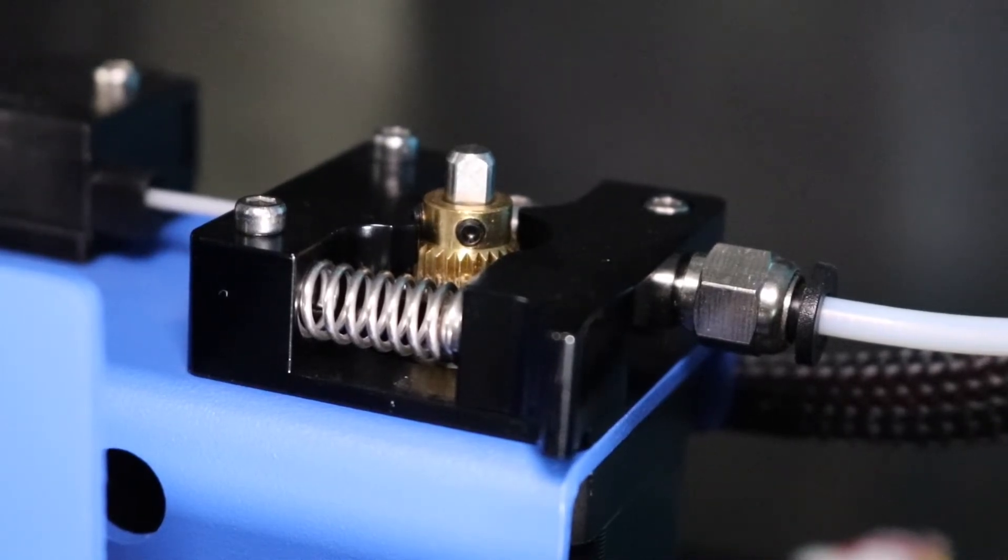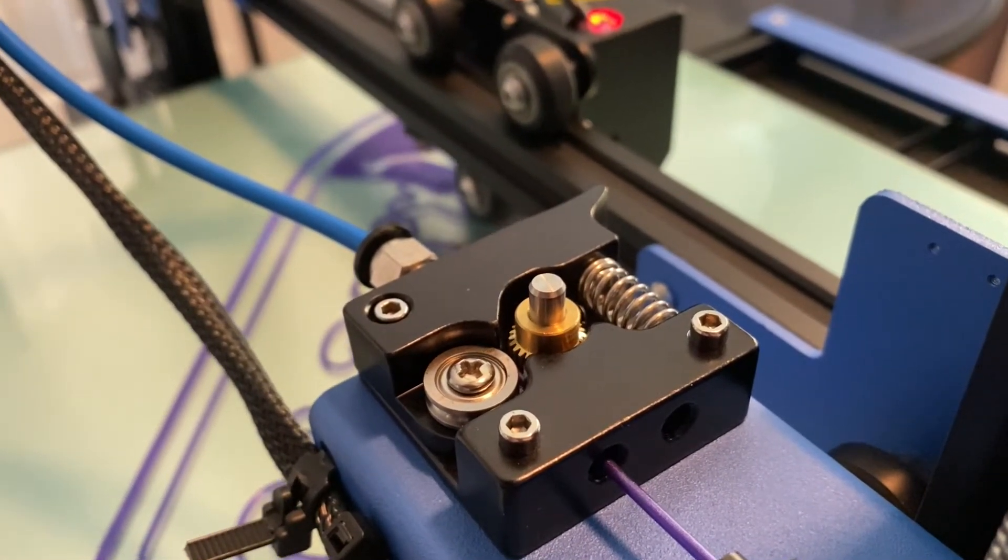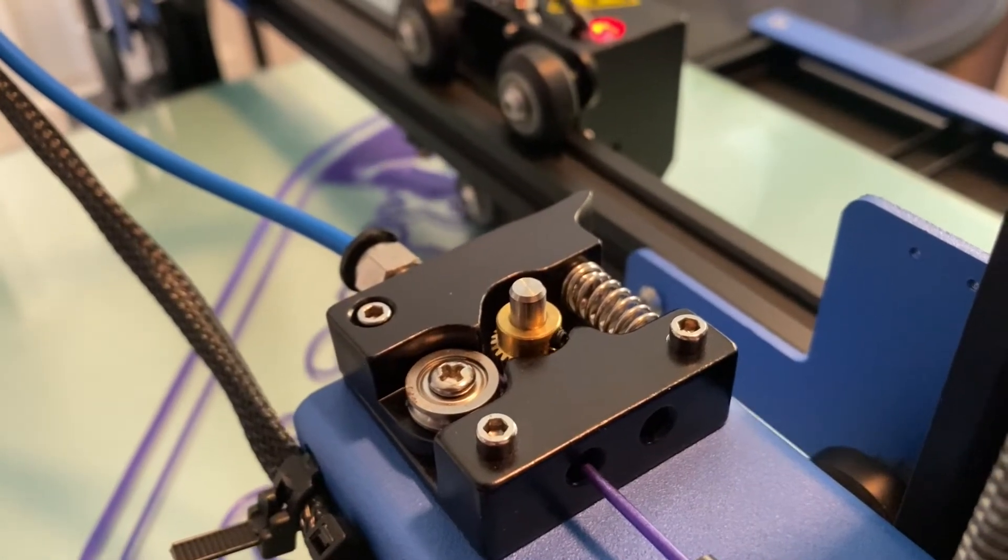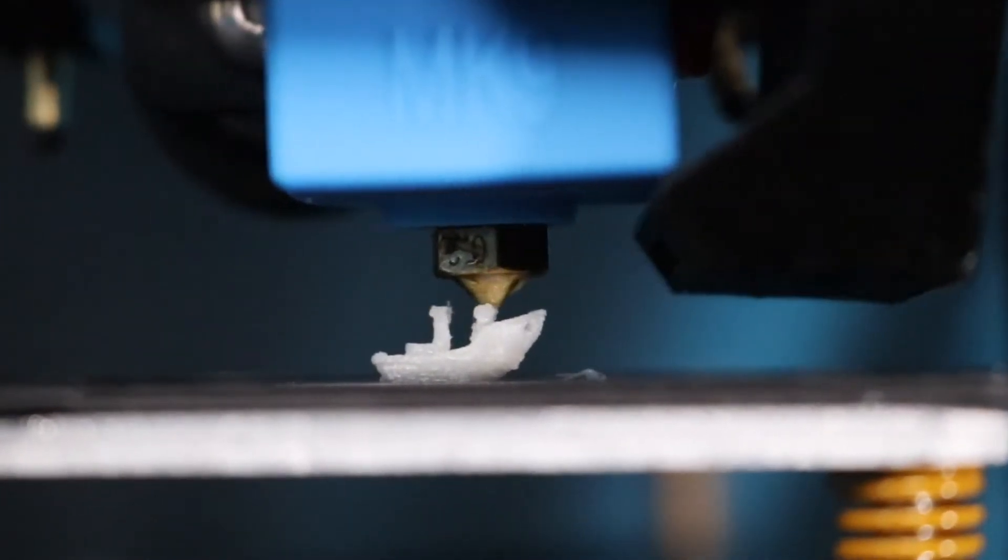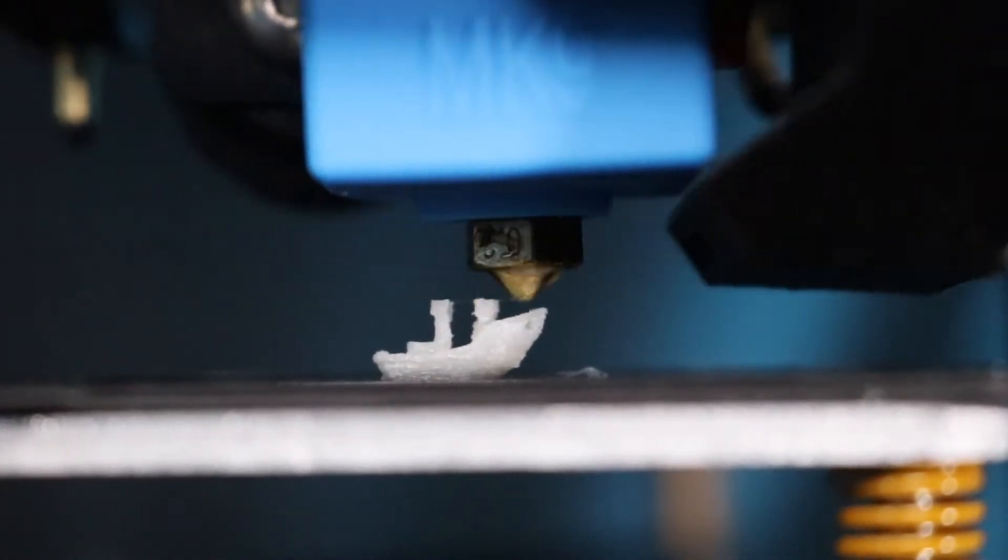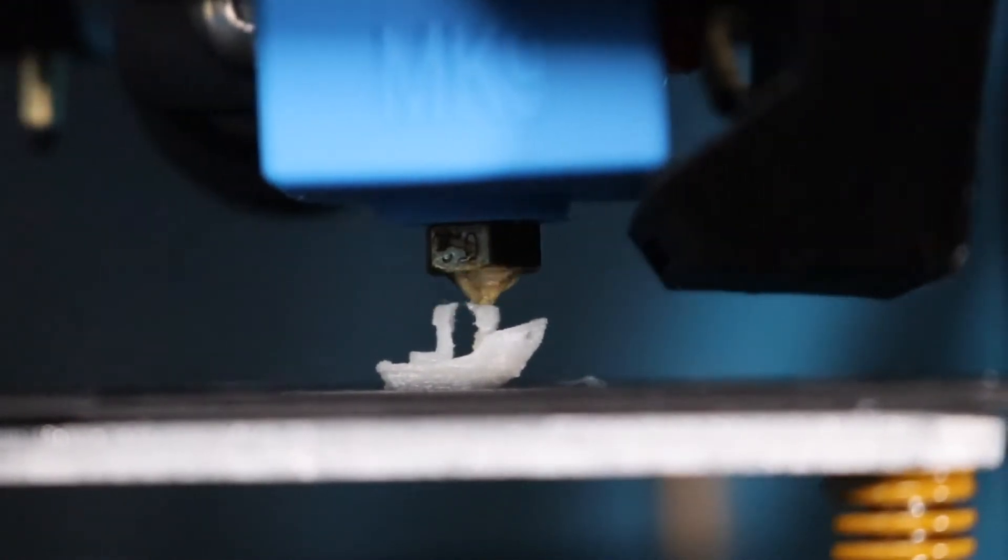This stands in direct contrast with the 0.8mm nozzle, where the extruder gear looks like it's spinning almost continuously. The level of detail I was able to capture was pretty impressive, especially considering how thin the layers were on some of the overhangs on the Benchy.